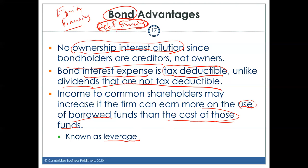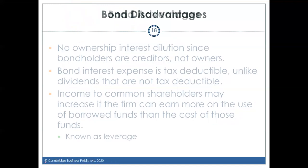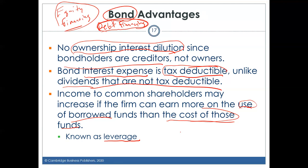With equity financing, the company gets money from new shareholders but dilutes existing ownership. There's no formal obligation to pay dividends, so the incentive to invest profitably is less formal. Leverage is essentially the ratio of debt financing to equity financing in a company's total capital structure. Debt creates a stronger formal incentive to invest in profitable projects because interest must legally be paid.